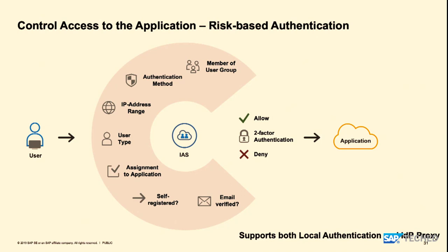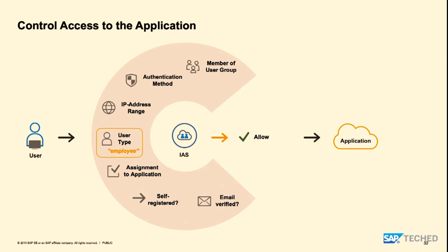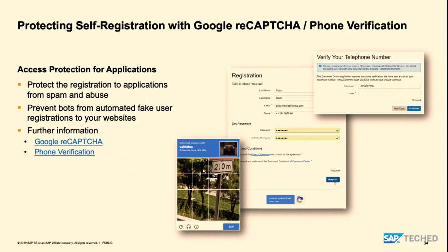With different options, we can define rules for when access to a particular application is allowed, when two-factor is requested, and when access is denied. For example, an employee can easily access applications, but if they're in a particular IP range zone or are an admin, they must use two-factor authentication. We'll see more details in the demo.